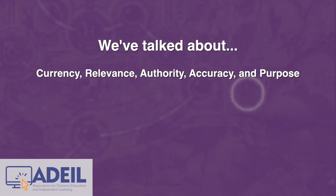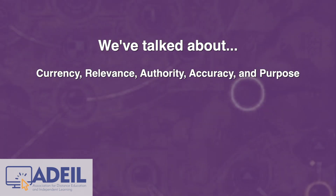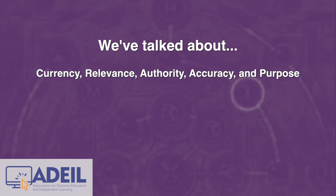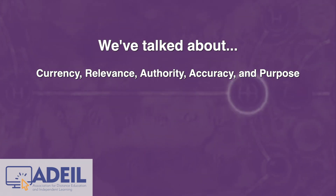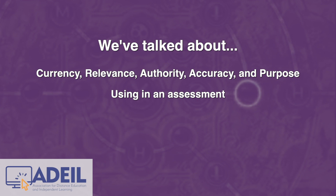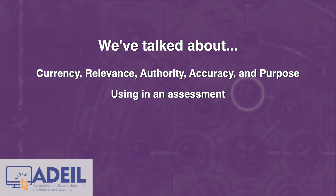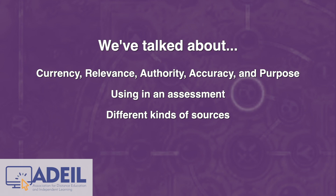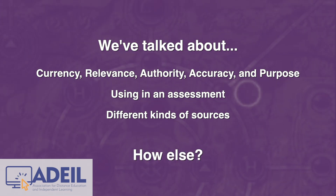So we've talked about examining the currency, relevance, authority, accuracy, and purpose of a resource. We can have students do this in an assessment like an annotated bibliography. We can think about how to apply these ideas to different types of sources, like a book versus a website. How else might we evaluate sources?